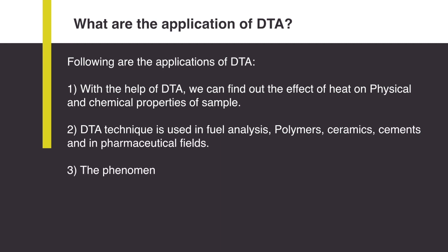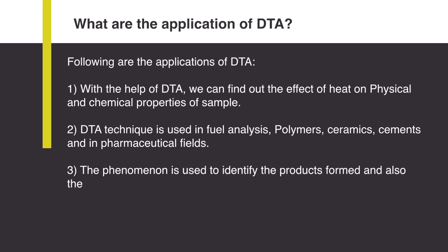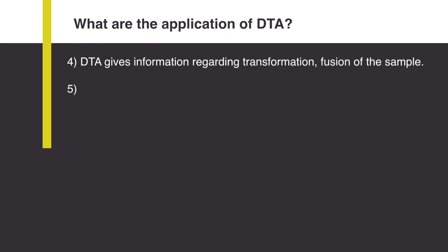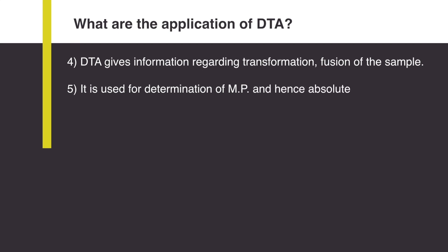The phenomena is used to identify the products formed and also for their quantitative estimations. DTA gives information regarding transformation or fusion of the sample. It is used for determination of melting point, and hence the absolute purity of an organic compound can be detected.